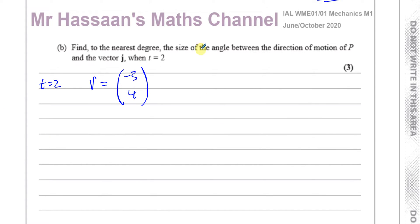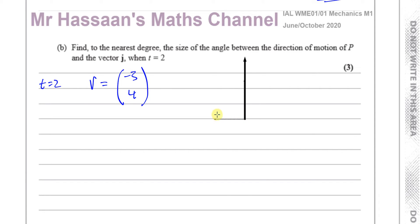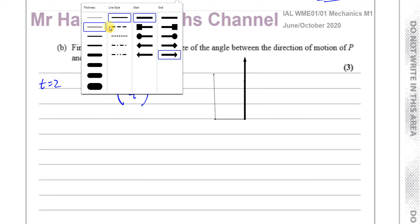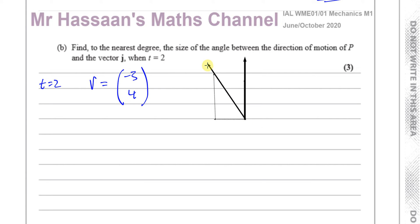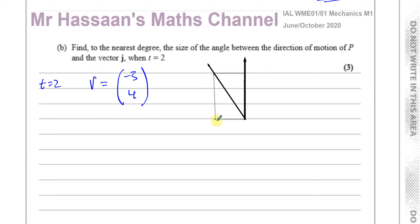We want to find what angle this velocity vector makes with the vector j. The vector j is one unit long in the vertical direction — along the positive y-axis. The vector (−3, 4) is 3 units to the left and 4 units up. So this is a right-angle triangle with sides 3 and 4, and we want the angle theta between this vector and the j direction.